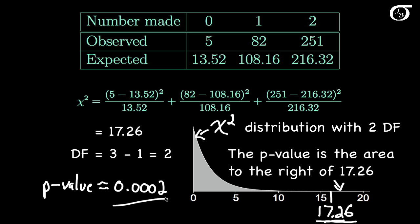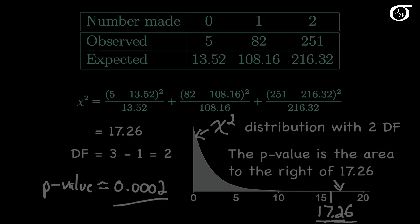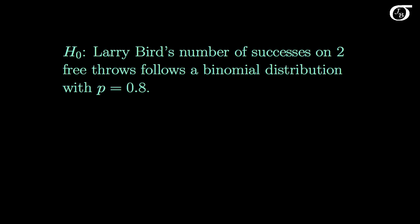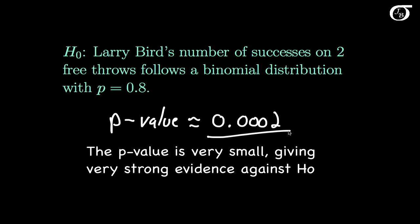We have a very small p-value indicating very strong evidence against the null hypothesis that Larry Bird's number of successes on 2 free throws follows a binomial distribution with p=0.8. This could mean the binomial distribution is not reasonable, or the binomial distribution is reasonable but this probability of success is not. As we'll see in the next example, it looks like Larry Bird made free throws with a success rate a little bit higher than that.